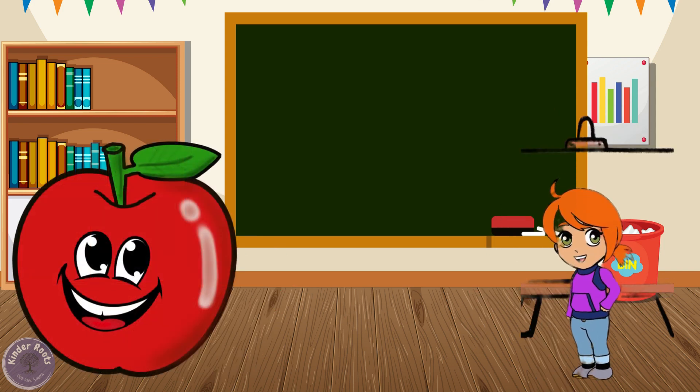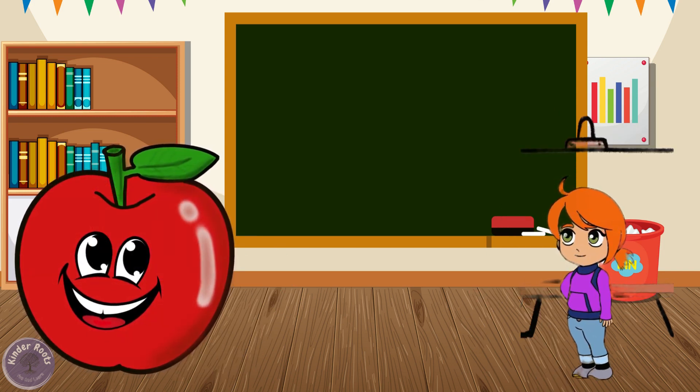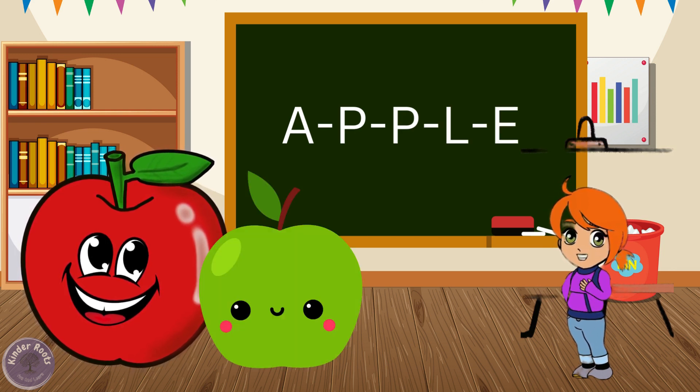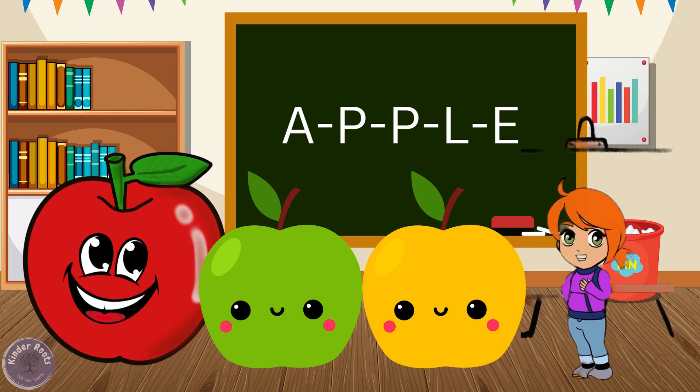Our first fruity friend is an apple. Can you say apple with me? A-P-P-L-E. That's right. Apples are crunchy and juicy and they come in different colors like red, green and yellow.